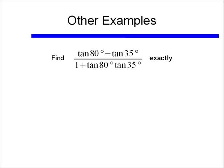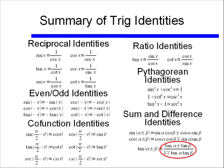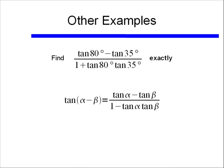Here's another example, and this one looks even worse. Find the tangent of 80 degrees minus the tangent of 35 degrees, all over 1 plus tangent of 80 degrees times tangent of 35 degrees. Again we're going to use our trig identities backwards. We're going to look at the right hand side and figure out which sum and difference identity this matches. Well this matches our tangent sum and difference identity. And since we have the form tangent alpha minus tangent beta in the numerator, we know that we're going to need the tangent of alpha minus beta — that is the difference identity for tangent.